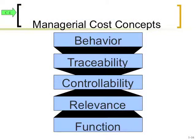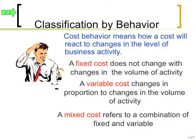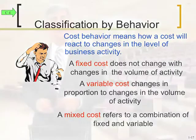On slide 16, we're going to look at managerial cost concepts — there are about five or six we're going to analyze: cost behavior, traceability, controllability, relevance, and function. Looking at cost behavior, what we mean is how a cost behaves when the volume of activity changes. A fixed cost is defined as one that doesn't change with levels of activity. For example, monthly rent — if you think of it in a personal sense like an apartment, your landlord doesn't care if you spend one night or 30 nights in your apartment, your rent is still the same.